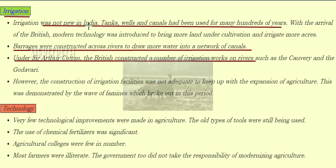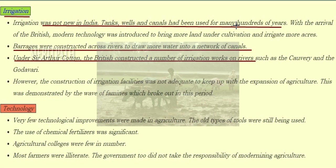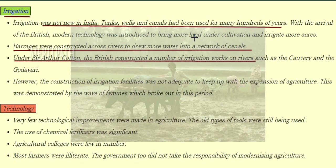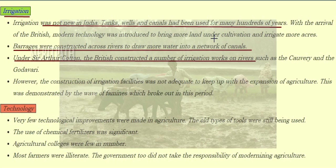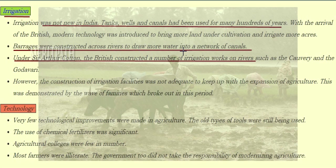Irrigation was not new in India. Tanks, wells, and canals had been used for many hundreds of years. With the arrival of the British, modern technology was introduced to bring more land under cultivation and irrigate more acres. Barrages were constructed across rivers to draw water into a network of canals. Under Sir Arthur Cotton, the British constructed irrigation works on rivers such as the Cauvery and Godavari. However, the construction of irrigation facilities was not adequate to keep up with the expansion of agriculture, as demonstrated by the wave of famines which broke out during this period.